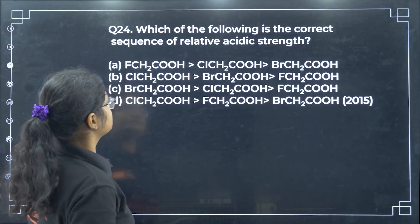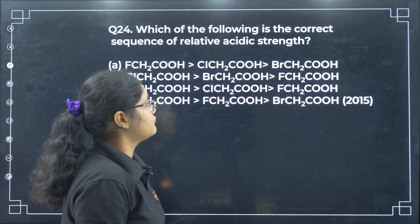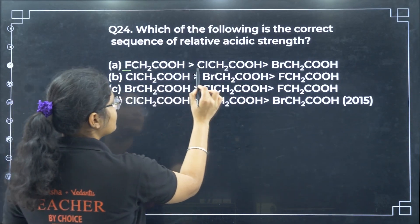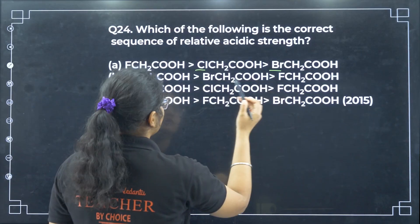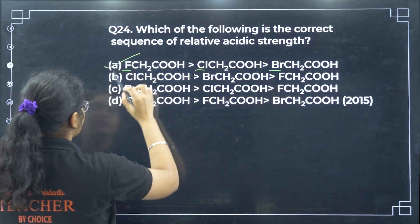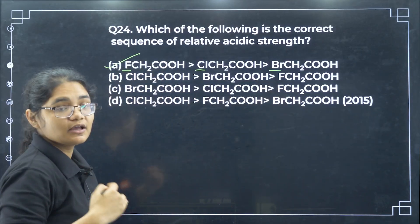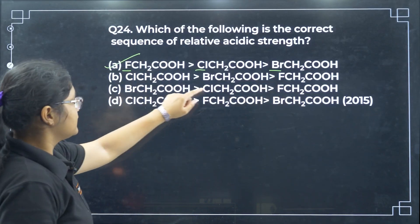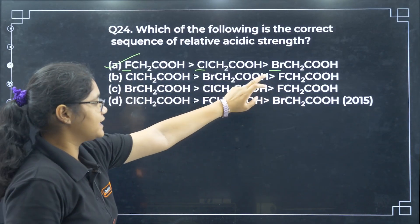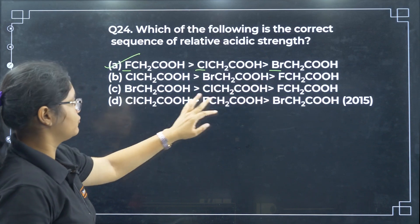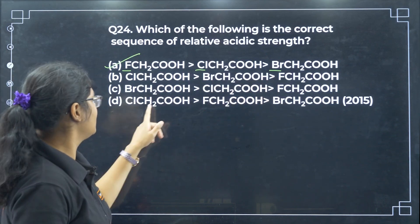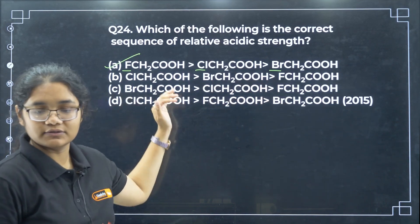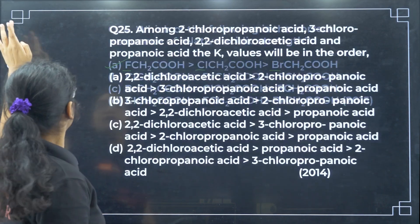Which of the following is the correct sequence of relative acidic strength for haloacetic acids? Fluorine, chlorine, bromine is the correct order because of higher electronegativity. Options where fluorine is at the end or in the middle are wrong.